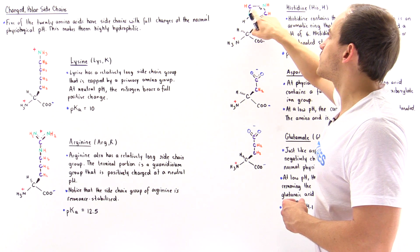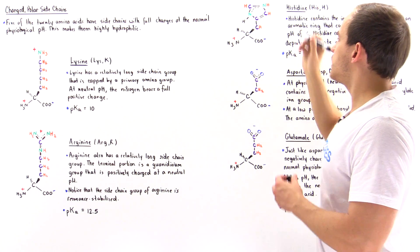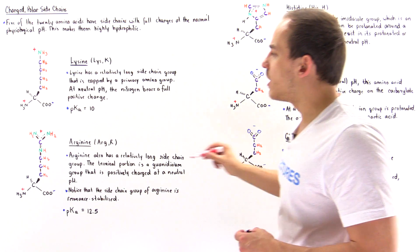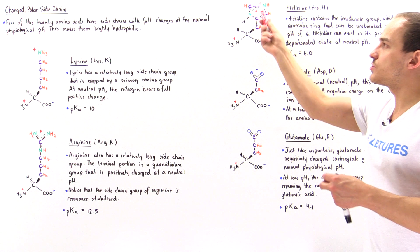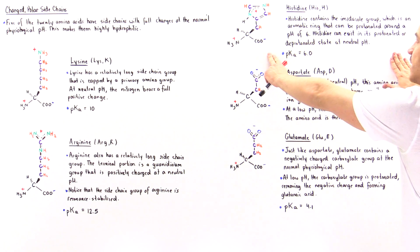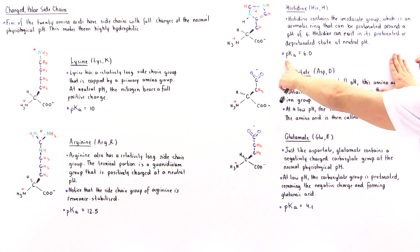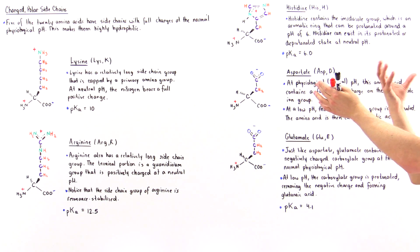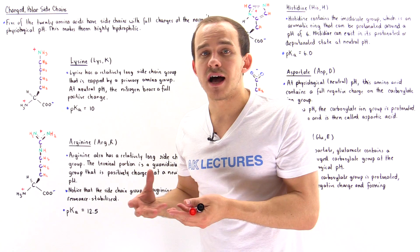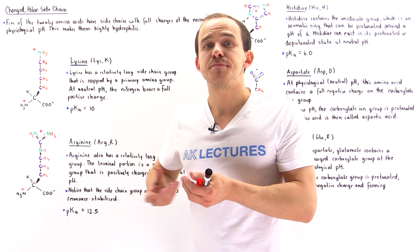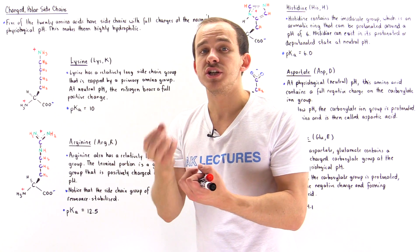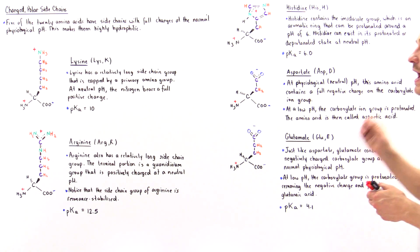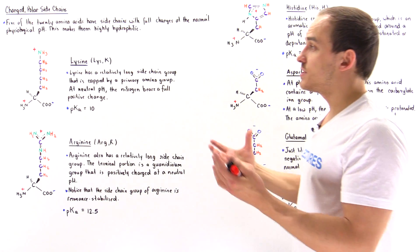When the imidazole nitrogen gains an H atom, the positive charge is delocalized among the two atoms of the ring, making histidine resonance stabilized, just like arginine, because this is essentially an aromatic ring. Because histidine contains a lower pKa and can be protonated or deprotonated at physiological pH, it is a very common amino acid found in the active sites of enzymes — the location on the enzyme where reactions actually take place — as we'll see in our study of biochemistry.